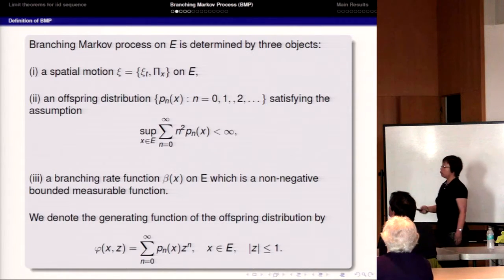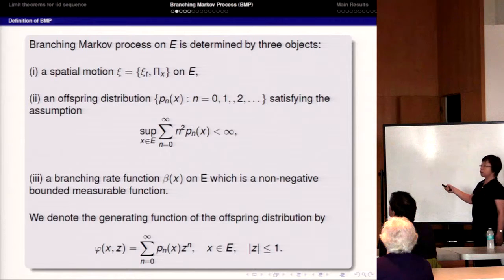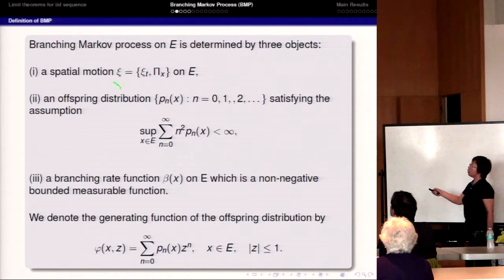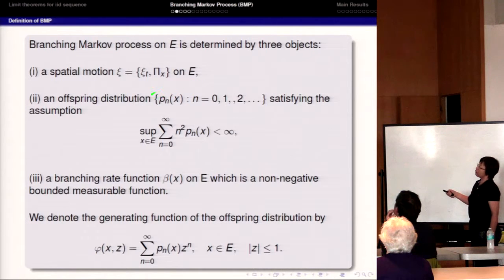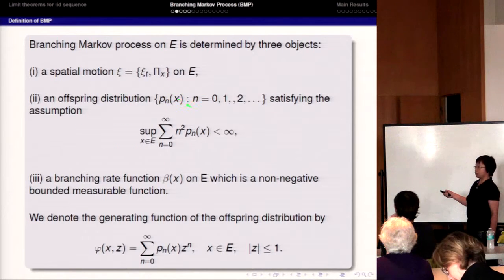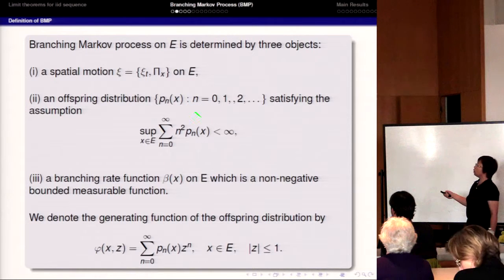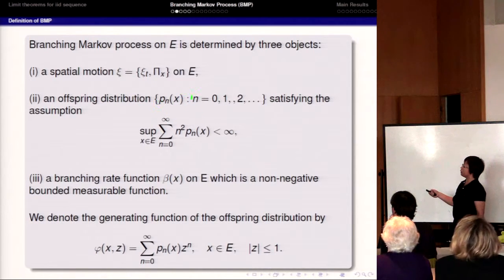Now let's look at what the branching Markov process is. This process is determined by three objects. The first is the spatial motion, which is a Hunt process.